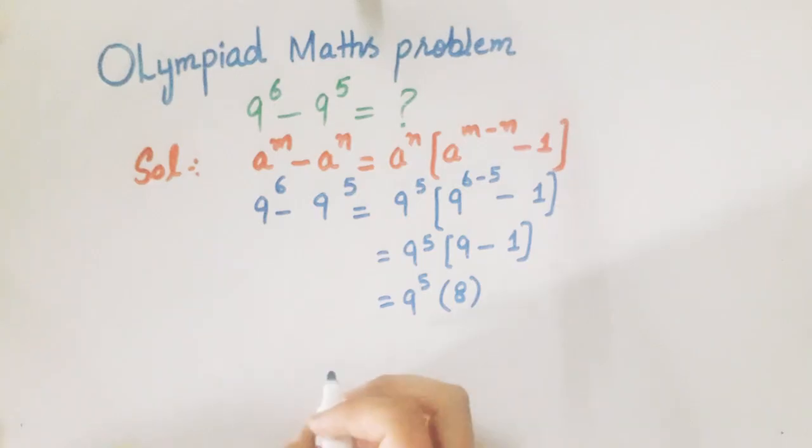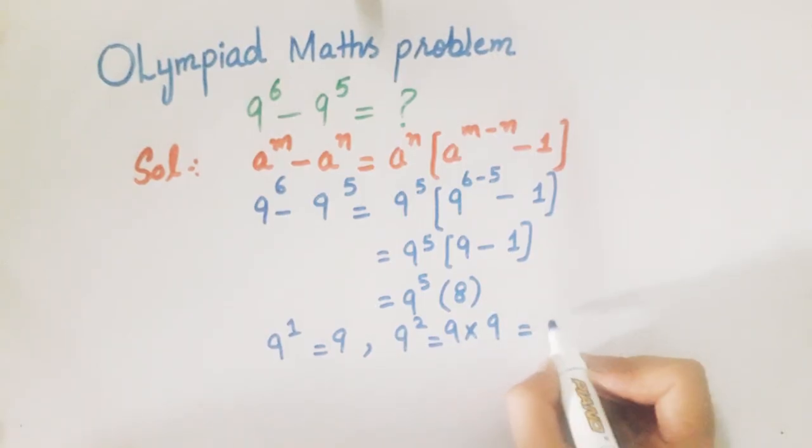Now we will solve this. First, 9^1 = 9. Then 9^2 = 9 × 9 = 81.